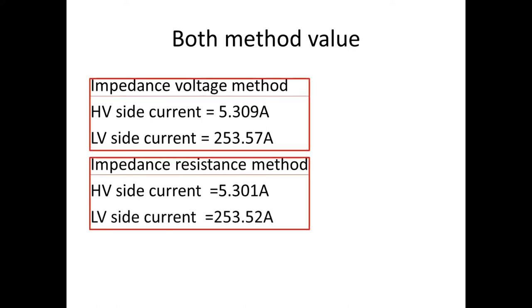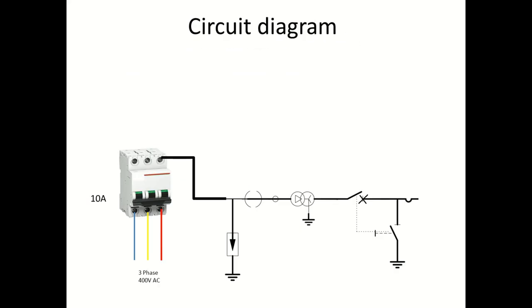Now let's set up in the field. This is a single-line diagram of the area. We set up on the delta side. This is a 10 A MCP, which carries 5.3 A for protection purposes. On the LV side, if we short-circuit, we use a welding cable rated 250 A to short the terminals — the short-circuit setup is ready.